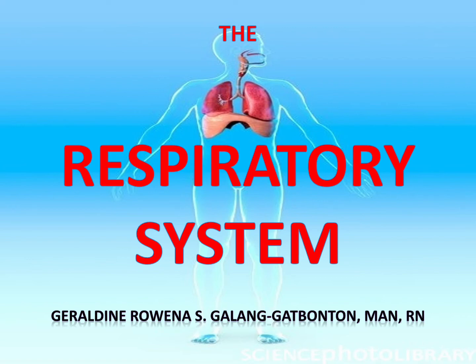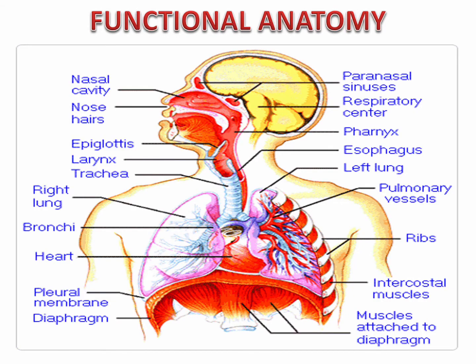Hello everyone. The focus of our discussion is the respiratory system. Here you will see the structures of the respiratory system or the respiratory tract. Remember that without oxygen, cells will eventually die. The respiratory system is the one which provides oxygen to the body. Another purpose of the respiratory system is disposal of carbon dioxide, which in turn helps regulate blood pH.